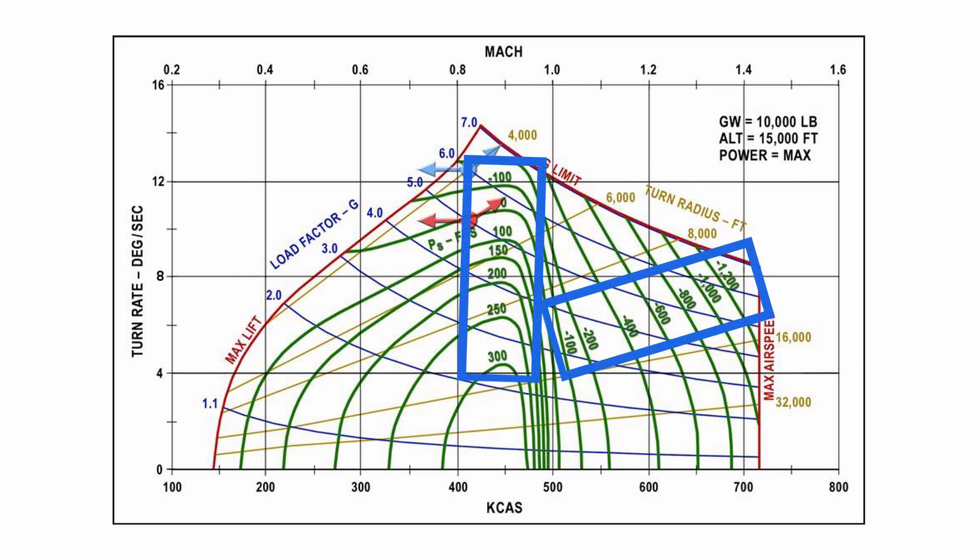Now what about all these green lines? These are specific power lines, and they tell us how much energy we'll gain or lose when we're at that point on the chart. These are the lines that bring this entire chart together and are also the most likely to confuse people. You'll sometimes hear them called P-S lines or P-sub-S, and what they represent is what a pilot needs to do to maintain a turn at a specific speed and g-load.